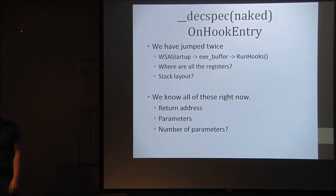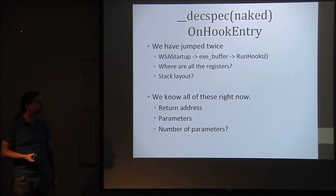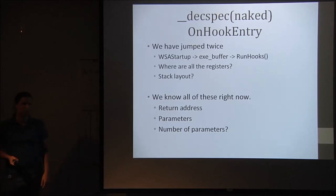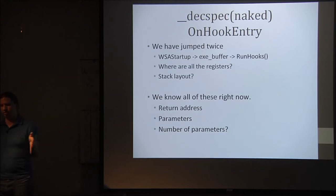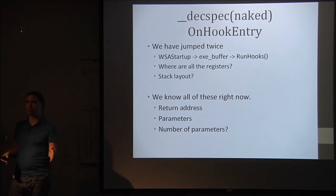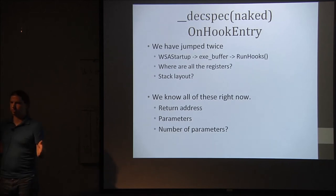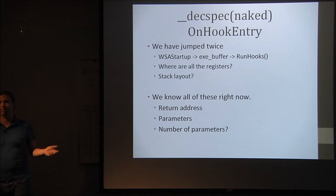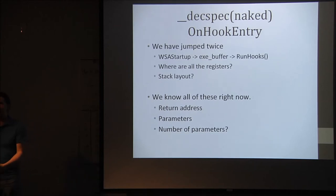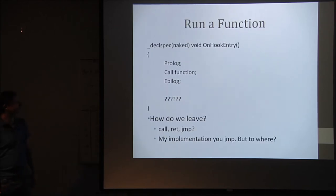Since we called WSA startup, we've jumped twice. We're now in run hooks — WSA startup jumped to our executable buffer, which jumped to run hooks. We're in the frame of this function; we know where the return address is, where the function will return to. We have the parameters — with a little more knowledge of how many there are and how big — and we have the return address. The key question is the number of parameters, because if you want to capture them, you need to know how many are on the stack.